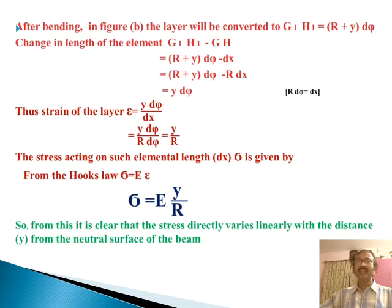The stress acting on such element dx is given by sigma. From Hooke's law, we know that sigma equals E times epsilon. Finally, sigma equals E times y by R, where E is the modulus of elasticity, y is the distance from the neutral axis, and R is the radius of curvature. From this, it is clear that the stress directly varies linearly with the distance from the neutral surface of the beam.